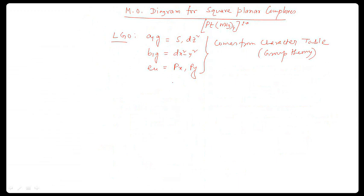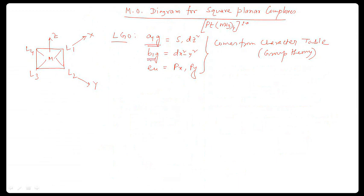First, for a square planar complex. It looks like this: M, L1, L2, L3, L4. So this is the Z axis, this is the X axis, this is the Y axis. The sigma LGOs give us: one is A1G, one is B1G, one orbital, one orbital, two orbital, and EU — two orbital. Total four orbitals.